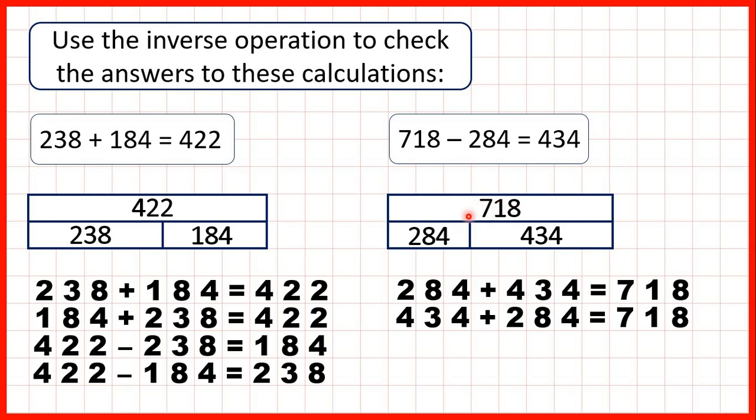This bar model gives us two subtraction calculations so it gives us the calculation that we have here but it also tells us that 718 minus 434 equals 284. So if we subtract our answer we should get the number that we're subtracting because with the bar model if we subtract one of the numbers on the bottom we should get the other number.